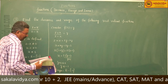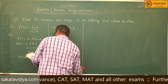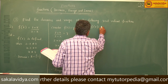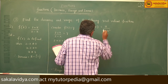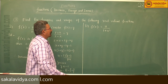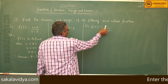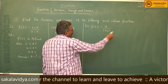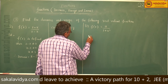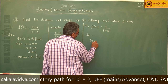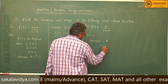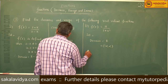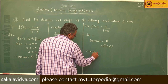Next, the second problem: f of x is equal to x by (1 plus x squared). In this problem, x may be 0 — no problem, 0 by 1 is 0. Negative values also satisfy, positive values also satisfy. That is why domain is equal to the set of real numbers R, or minus infinity to infinity. To find its range, consider f of x equal to y.